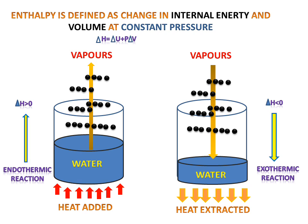So, what is enthalpy? Enthalpy is simply the heat change of the system. If heat is added to the system, it is an endothermic reaction. If heat is extracted from the system, it is an exothermic reaction. Enthalpy is defined as ΔU — the change in internal energy — plus the product of constant pressure and change in volume. The internal energy and volume are changed by heat addition or heat extraction.